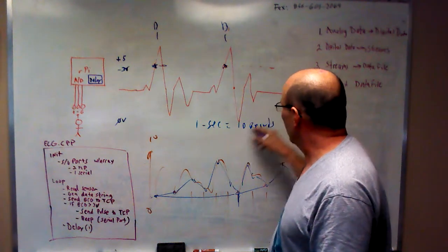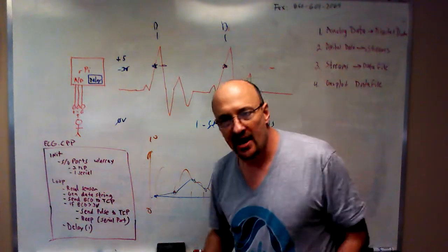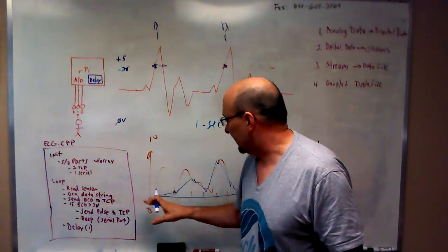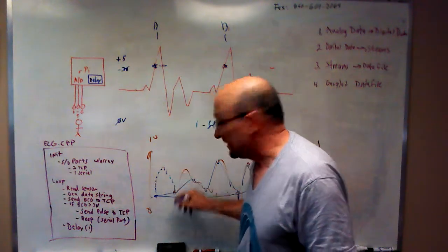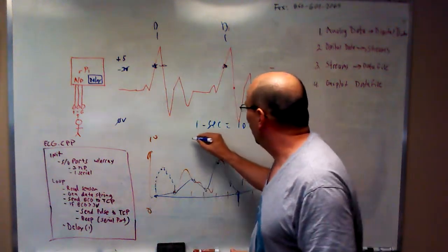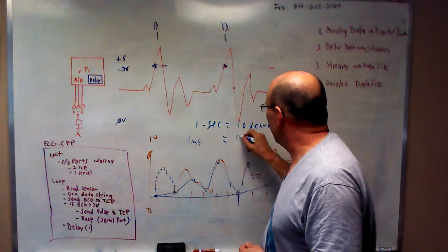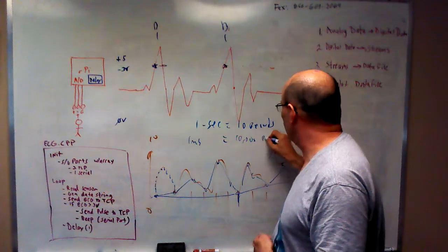If, however, I'm sampling it at a much higher rate, let's say I want to sample at one millisecond or one one-thousandth of a second, I would get a very accurate picture because I'm taking samples so quickly. But I would also have, at one millisecond, I would have ten thousand records of data.